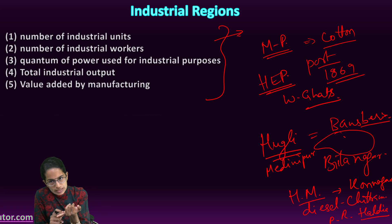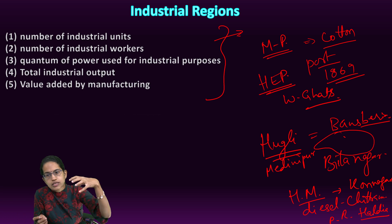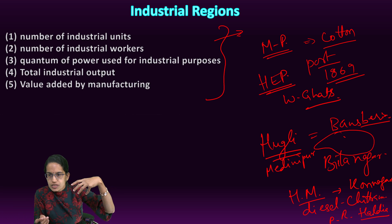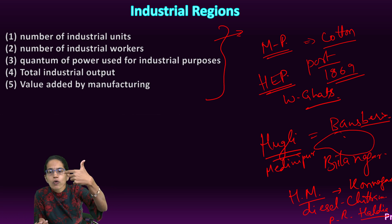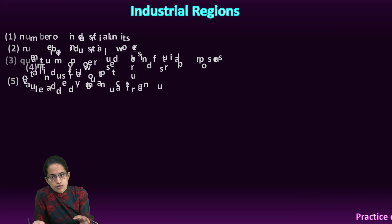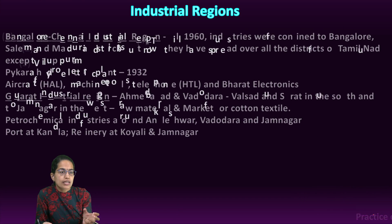To summarize, the Mumbai-Pune industrial region started with cotton, while Hugli initially started with tea, indigo, and jute mills and later expanded to other plants.